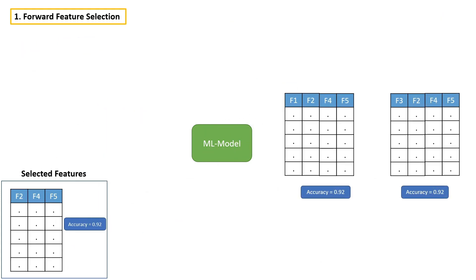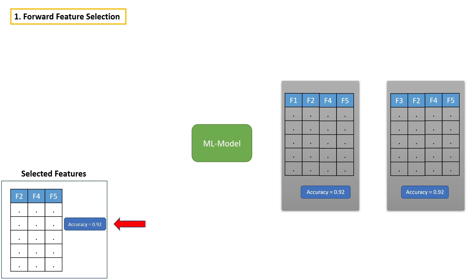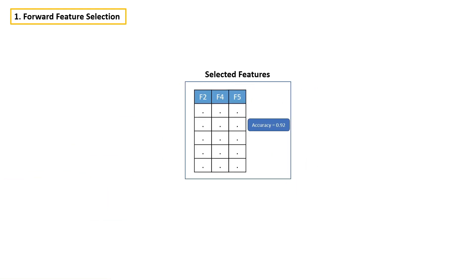Now I hope you got the point. We have to repeat the process again and again until we see no improvement in the model. If you see here, adding feature one and three does not make any improvement, so we can simply stop the process here. In some cases we have to continue the process until we build a model with all the available features. In this case, after building a model with all the available features, the accuracy is still 92%. Just think about it — if you are able to get 92% accuracy with just these three features, why do we need to care about all the other features, because adding extra features does not make any improvement in the model.